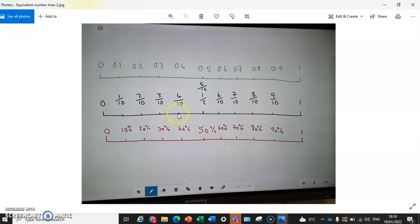And then we divided each half into 5 separate bits, so we have 1, 2, 3, 4, 5, 6, 7, 8, 9, 10 bits all together. Each of those 10 bits is 1 tenth, so here's 1 tenth, 2 tenths, 3 tenths, 4 tenths, 5 tenths which is the same as a half, 6 tenths, 7 tenths, 8 tenths, 9 tenths, and 1 or 10 tenths.